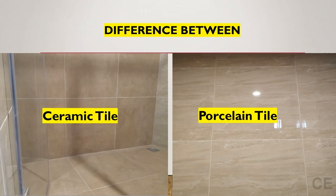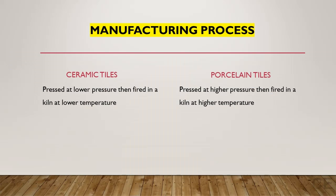Despite the fact that ceramic and porcelain tiles look very similar, there are plenty of noticeable differences between the two. Let us discuss some of the differences between ceramic tile and porcelain tile. Manufacturing process: ceramic tiles are pressed at lower pressure, then fired in a kiln at lower temperature.